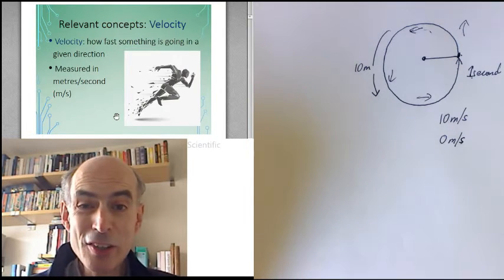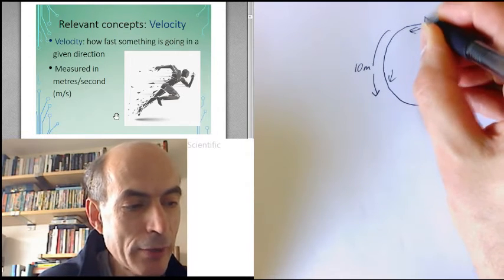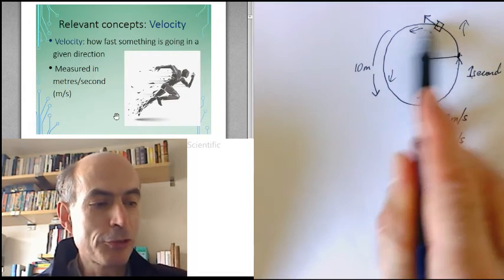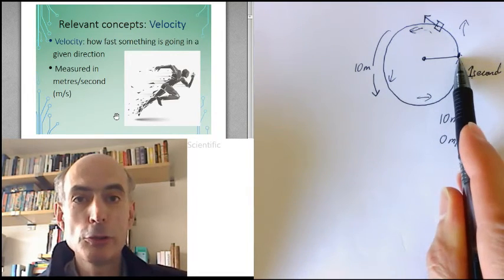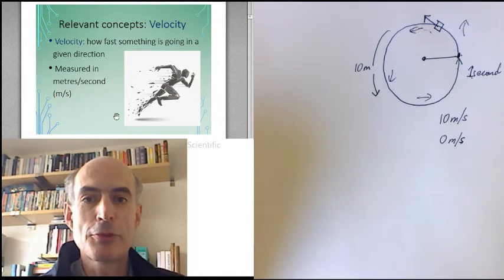There's an instantaneous velocity. At every single point, it is going in a particular direction at 10 meters per second. But its average velocity over an entire revolution is zero. But the average speed is 10 meters per second.